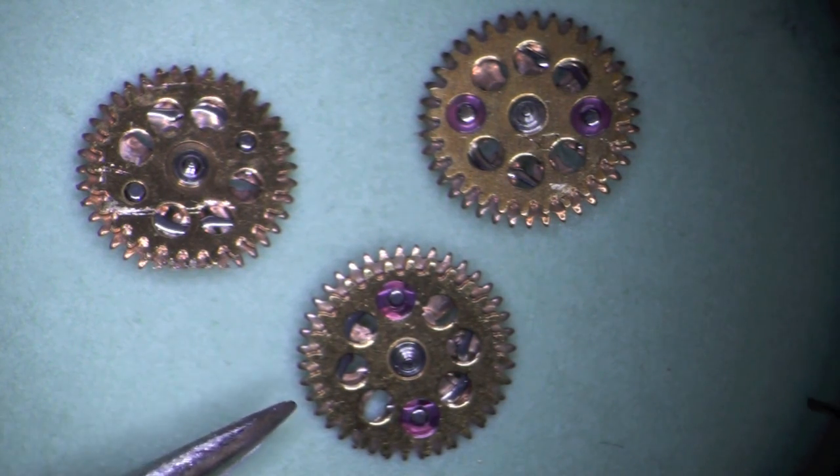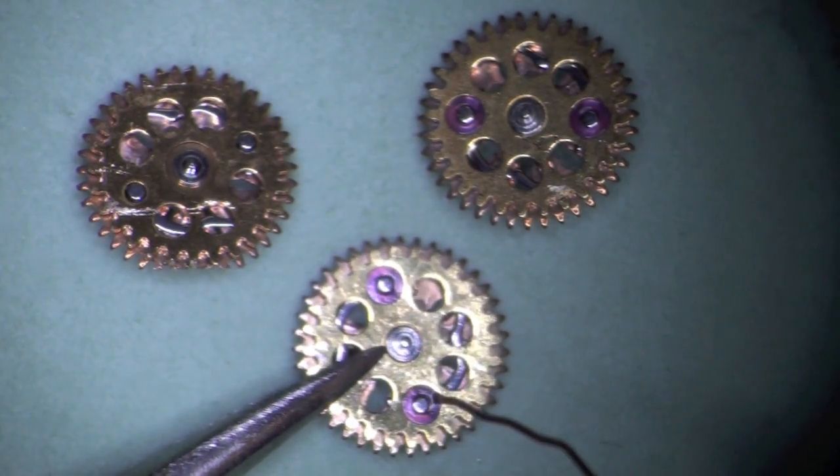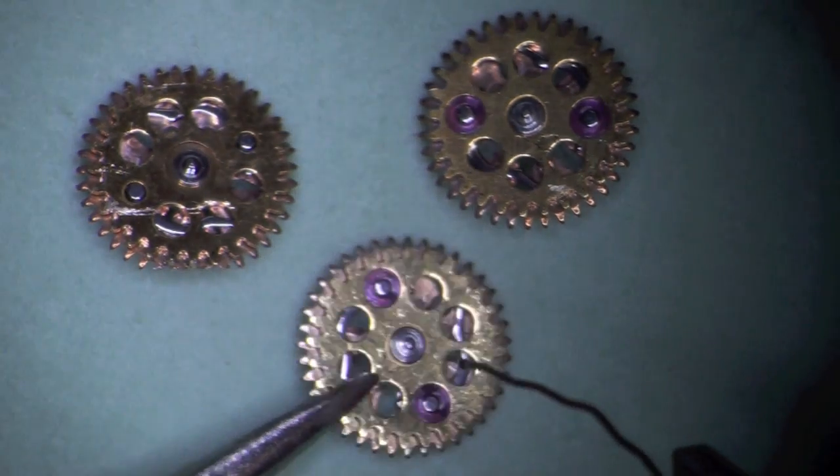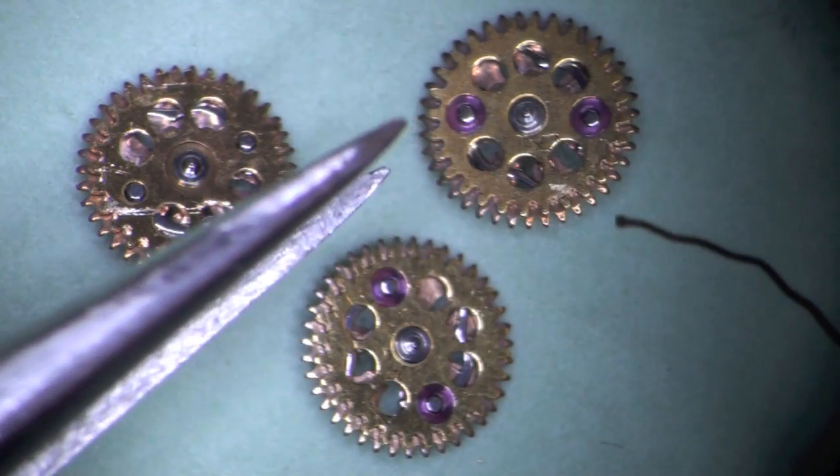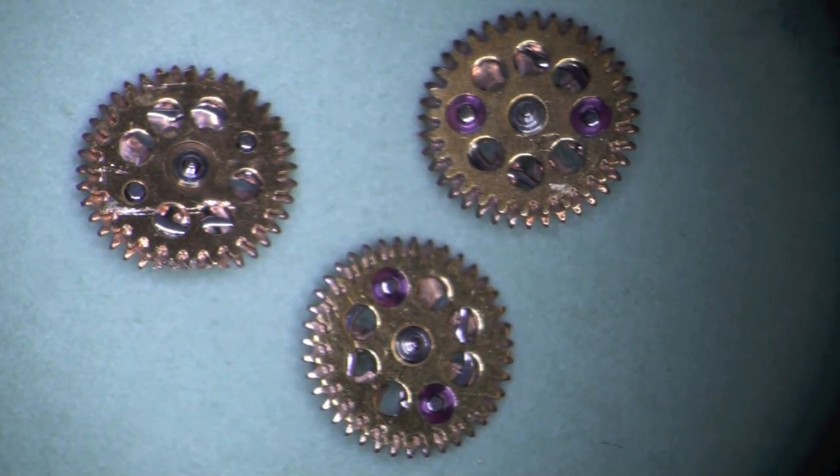Though there are many different styles of automatic winding mechanisms, this same function check can be performed on other calibers when keeping in mind the purpose is to check for the overall service quality of the reversing wheels.